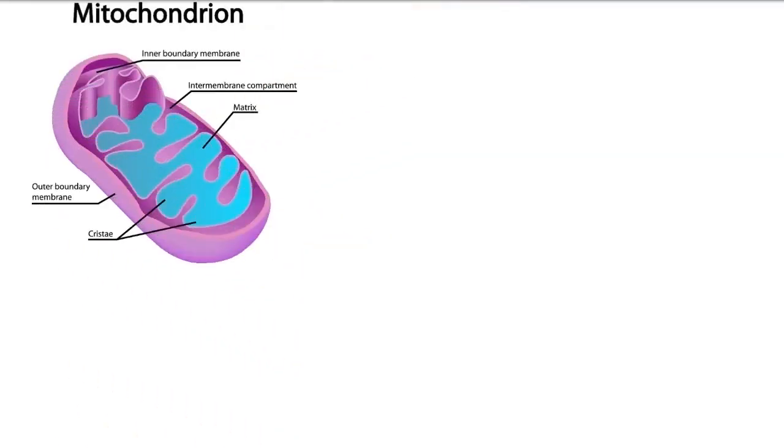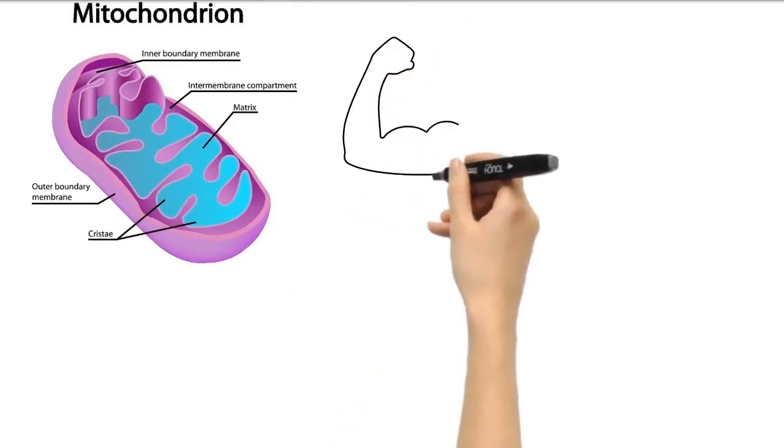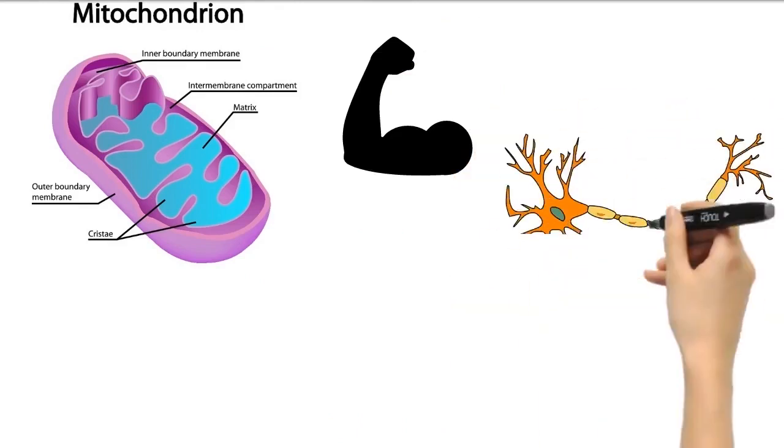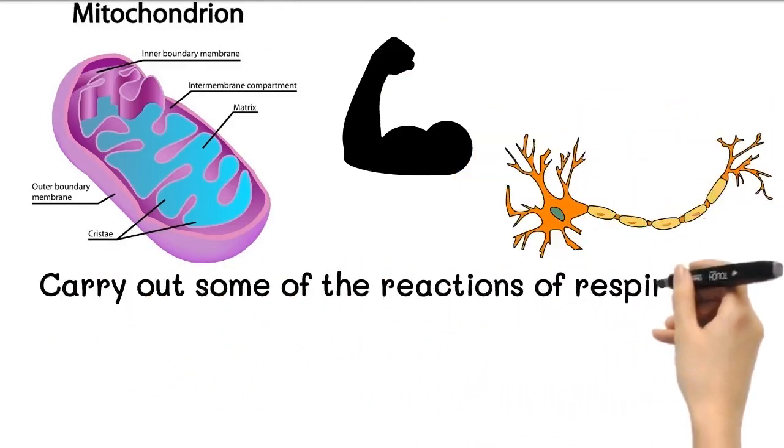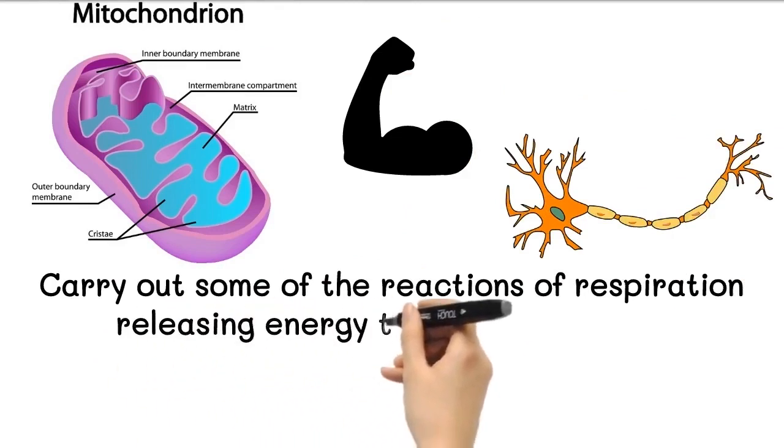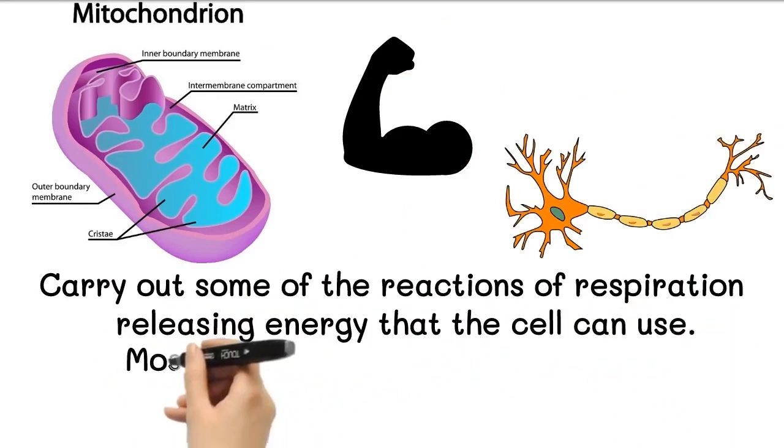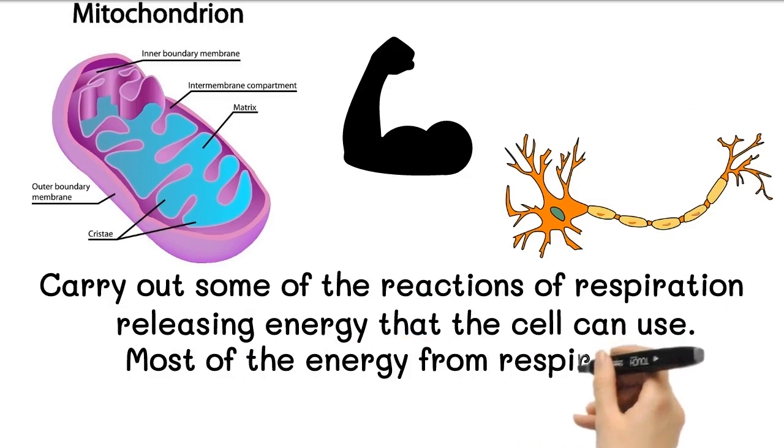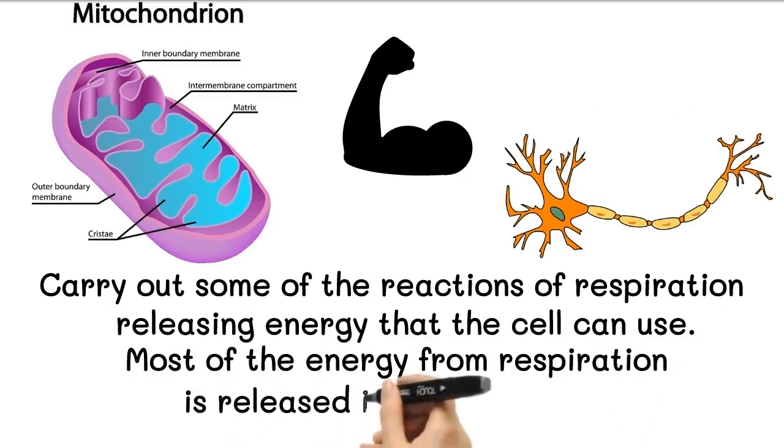One organelle that is found in the cytoplasm of all living cells is the mitochondrion. In cells that need a lot of energy, such as muscle or nerve cells, there are many mitochondria. They carry out some of the reactions of respiration, releasing energy that the cell can use. Most of the energy from respiration is released in the mitochondria.